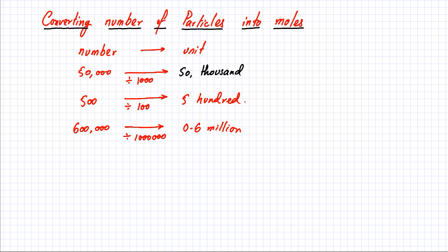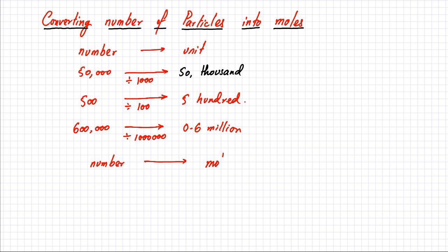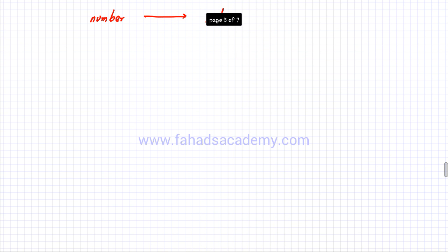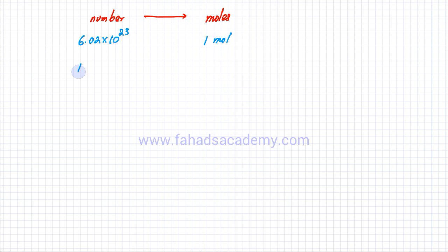Similarly, you can convert any number to a unit. Now we're counting atoms, which are present in very large numbers, so I'm going to convert that number into moles. One mole equals 6.02 × 10²³ particles. So if I have 10 × 10²¹ particles and want to find how many moles that is, I use ratios and cross multiply.